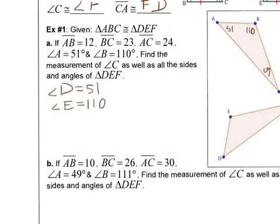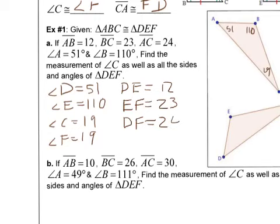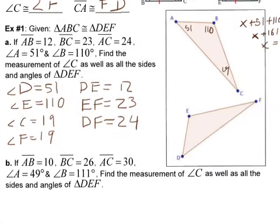If angle C is 19, since C corresponds with F, angle F is 19 as well. For the segments, I'll match them up: AB is the first two letters, DE is the next two — so DE equals AB, which is 12. BC lines up with EF, so EF is 23. And AC is the first and last, so DF is the first and last — DF is 24. I have now found all the parts on both triangles.